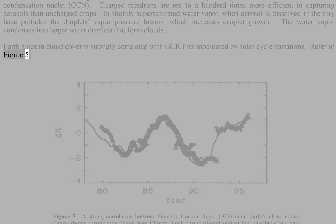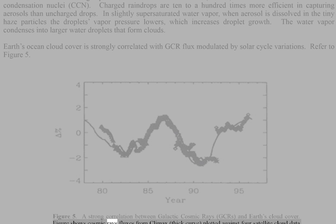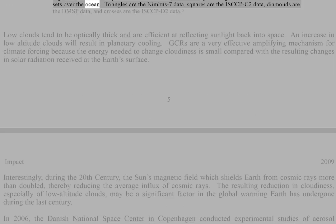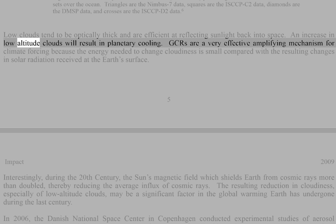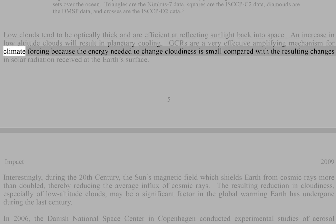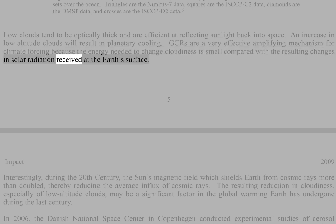Figure 5 shows a strong correlation between galactic cosmic rays and Earth's cloud cover, plotting cosmic ray fluxes against four satellite cloud data sets over the ocean. Low clouds tend to be optically thick and efficient at reflecting sunlight back into space; an increase in low-altitude clouds results in planetary cooling. GCRs are a very effective amplifying mechanism for climate forcing because the energy needed to change cloudiness is small compared with the resulting changes in solar radiation received at Earth's surface.